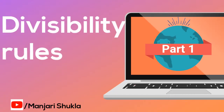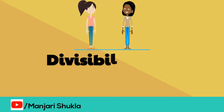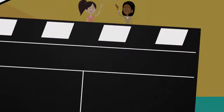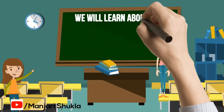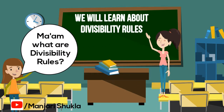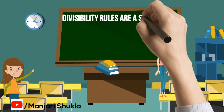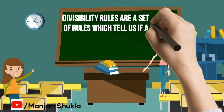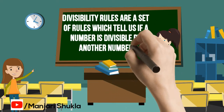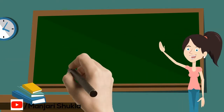Divisibility Rules Part 1. Today we will learn about Divisibility Rules 2 to 5. What are Divisibility Rules? Divisibility Rules are a set of rules which tell us if a number is divisible by another number. Let's start learning!